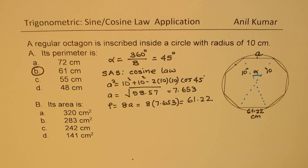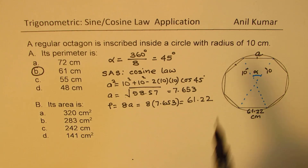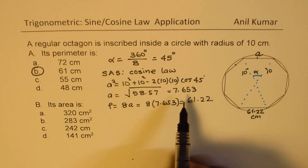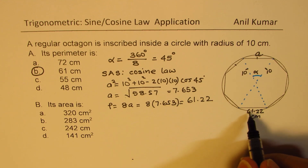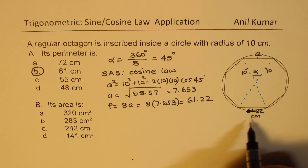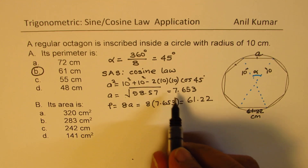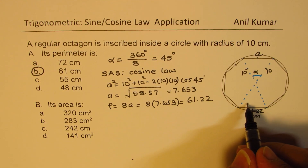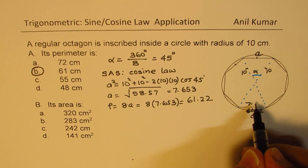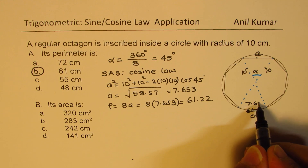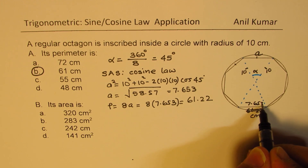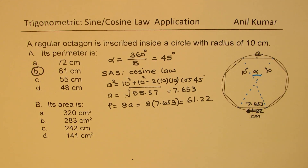So that is Part A. To clarify: the perimeter is 61.22 centimeters, and the length of each side is 7.653 centimeters.